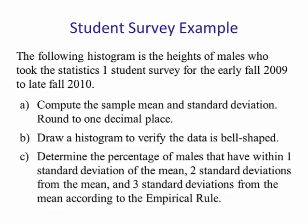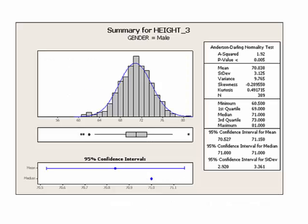Let's look at a student survey example. The following histogram shows the heights of males who took a Stats 1 student survey from early fall 2009 to late fall 2010. We need to: compute the sample mean and standard deviation rounded to one decimal place, draw the histogram to verify its bell shape, and determine the percentage of males within one, two, and three standard deviations of the mean. We can see that the heights are approximately bell-shaped, so we can apply the empirical rule.